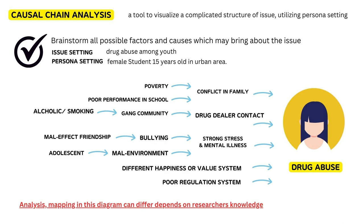First, the causal chain analysis is a tool to visualize the complicated structure of an issue. Firstly, decide your research issue — the phenomenon you are targeting in the research. Here, let's assume our research target is drug abuse among youth.